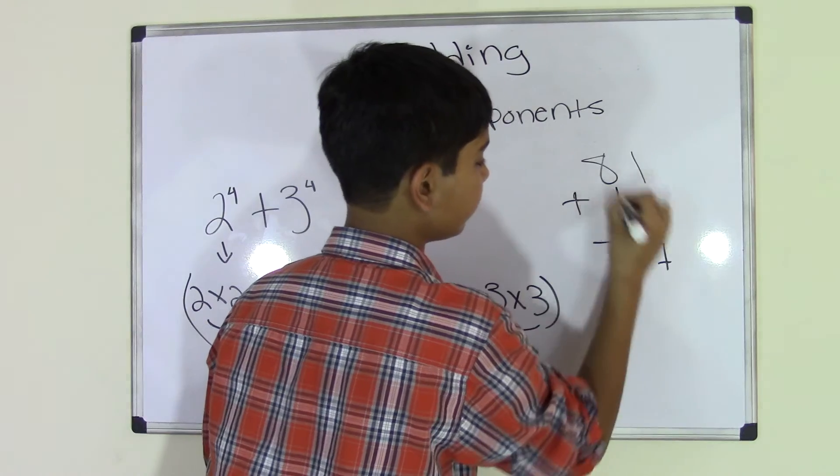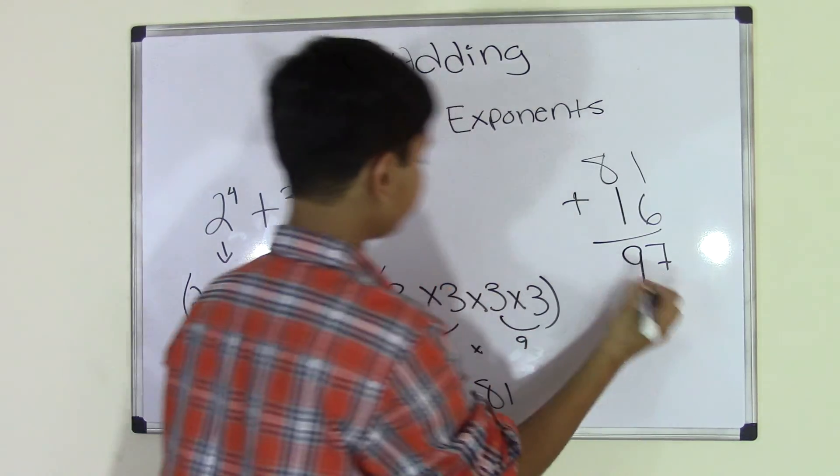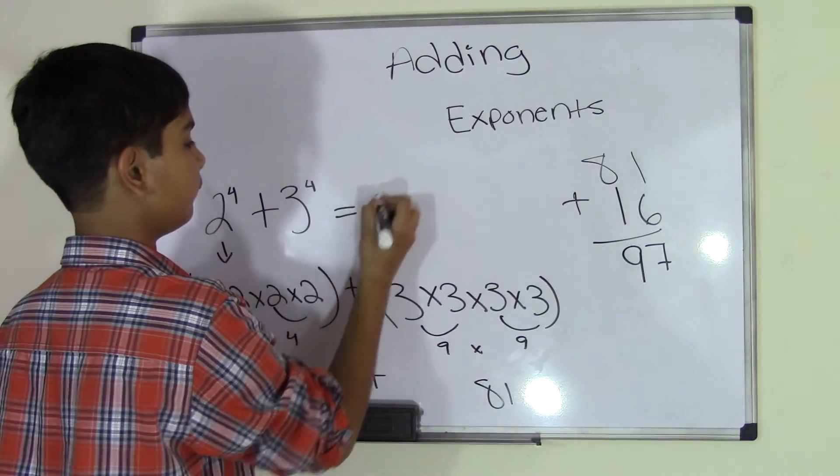And 6 plus 1 is 7. And 8 plus 1 is 9. So we get a sum of 97.